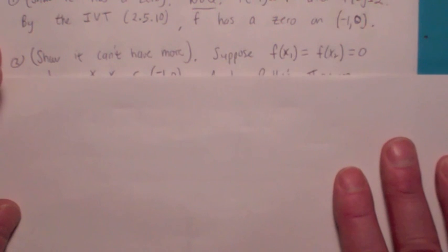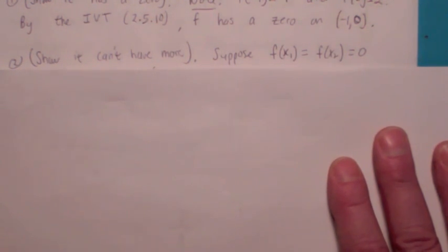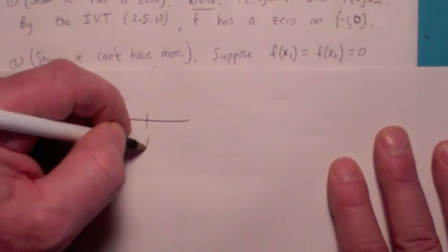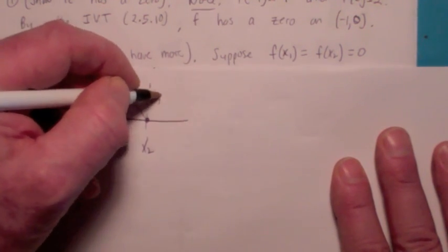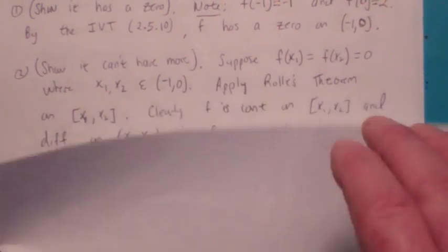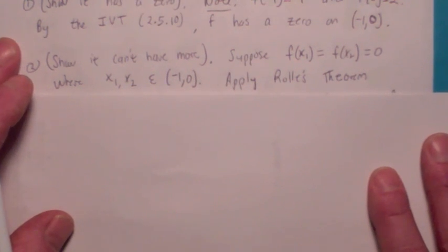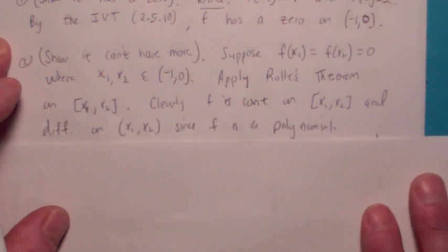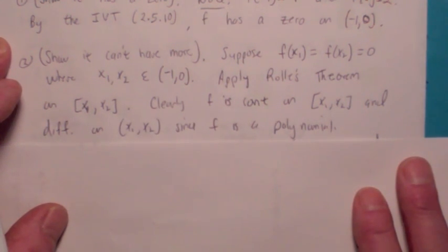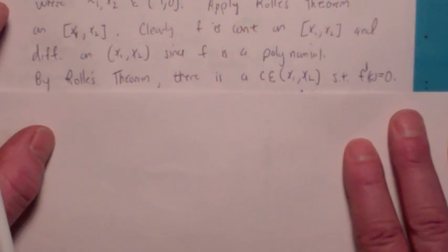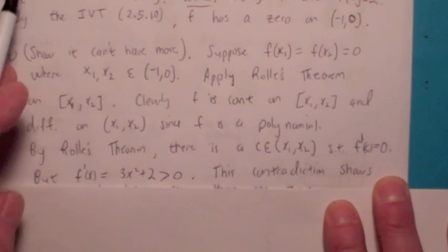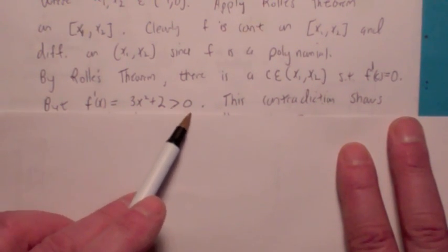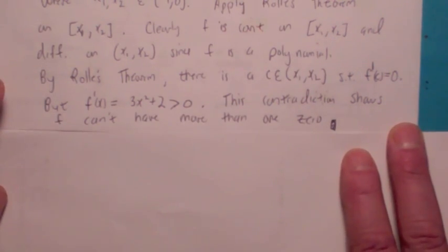Now, how do you show it can't have two or more? We suppose it has two zeros and show that's impossible — proof by contradiction. If it has two zeros x1 and x2 in the interval (−1, 0), we apply Rolle's Theorem on [x1, x2]. Since f(x) is a polynomial, it's continuous on [x1, x2] and differentiable on the open interval. Rolle's Theorem says there must be a value x = c where f'(c) = 0. But the function is x³ + 2x, so f'(x) = 3x² + 2, which can never be zero — it's always positive. This contradiction shows f can't have more than one zero.